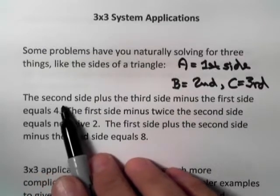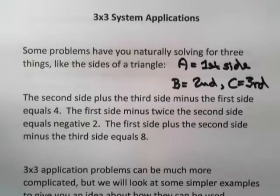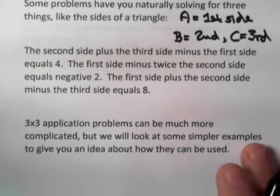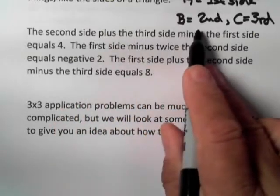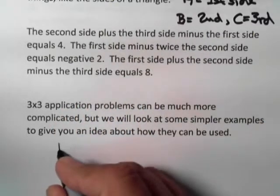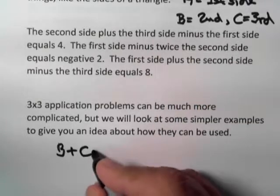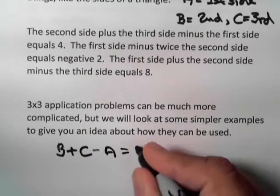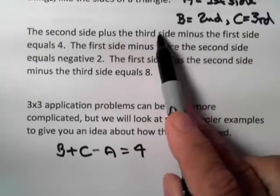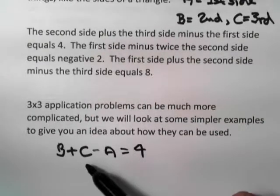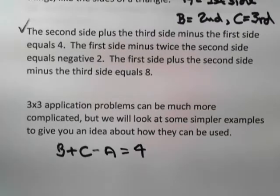The first sentence says the second side plus the third side. The second side is B, the third side is C. Writing the equations down: the second side B plus the third side C, minus the first side A, equals four. Double-checking: B plus C minus A equals four. There's our first equation from our first sentence.